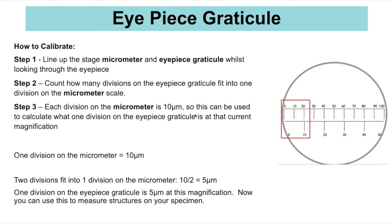For example: one division on the micrometer is 10 micrometres, and two eyepiece graticule divisions fit into that one division. So you do 10 ÷ 2 = 5 micrometres, meaning at this magnification one division on the eyepiece graticule is worth 5 micrometres. You then remove the stage micrometer, put in your slide, and use the eyepiece graticule to measure the actual size of cells you are viewing.